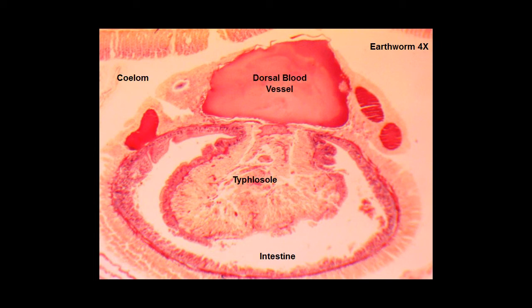Let's recap with this labeled diagram of the slide. We have the body cavity, the coelom, the dorsal blood vessel, and the typhlosole for increasing surface area inside of the intestine.